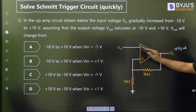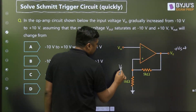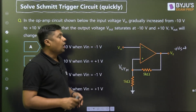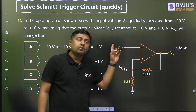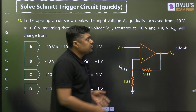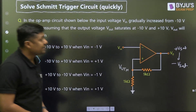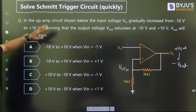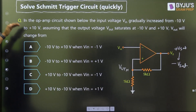That is the trick. If the input is highly negative, the output is positive. And as the input increases, there will be an upper threshold level. When it crosses the upper threshold level, the negative terminal becomes greater than the positive terminal. Once the negative terminal becomes greater than the positive terminal, the output will switch from plus V-sat to minus V-sat. Assuming the output saturates at minus 10 volts and plus 10 volts, V-out will change as the input gradually increases from minus 10 to plus 10 volts.